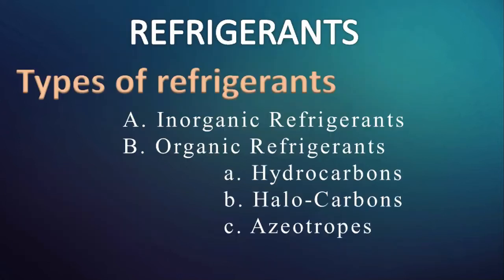Refrigerants are classified as inorganic and organic refrigerants. Inorganic refrigerants are ammonia, carbon dioxide, etc. Organic refrigerants are hydrocarbons, halocarbons and azeotropes. Refrigerants are also classified as primary and secondary refrigerants.